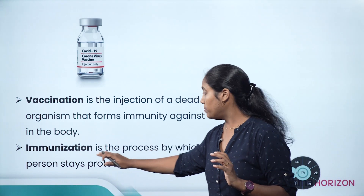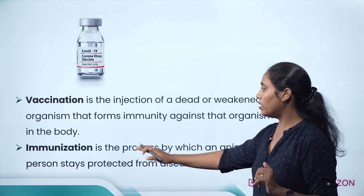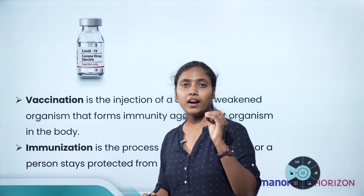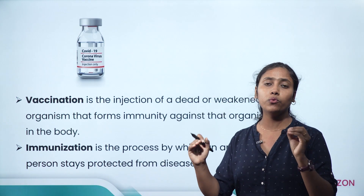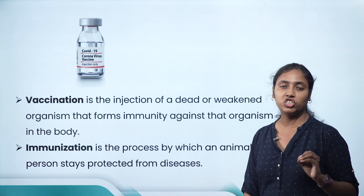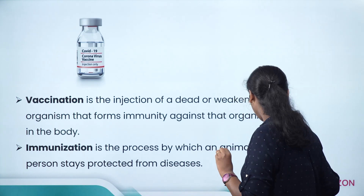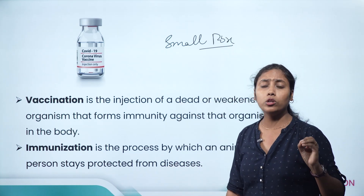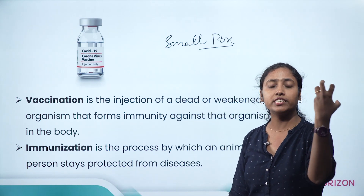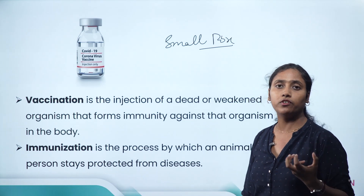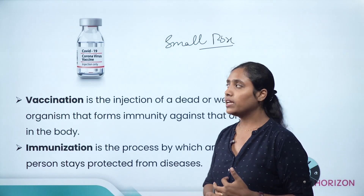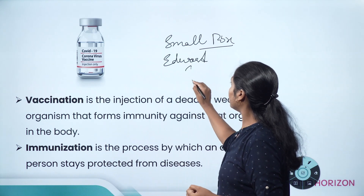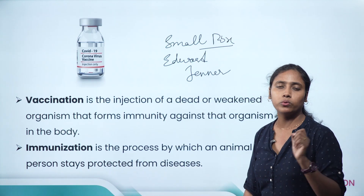Immunization is the process by which an animal or person stays protected from disease. Using this procedure, the world has completely eradicated smallpox. Smallpox was a deadly disease, but by vaccinating all people in affected areas, we were able to successfully eradicate it. The smallpox vaccine was first discovered by Edward Jenner.